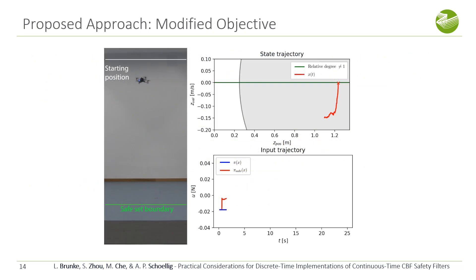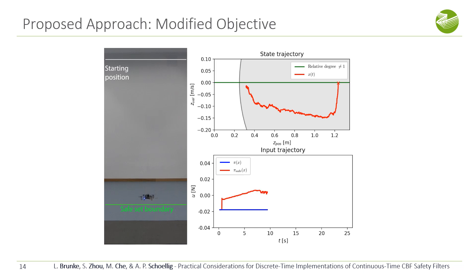We demonstrate the effectiveness of the CBF safety filter with our modified objective on the same quadrotor example. While using the same CBF, we are now able to prevent spikes in the control input and keep the system inside the safe set.